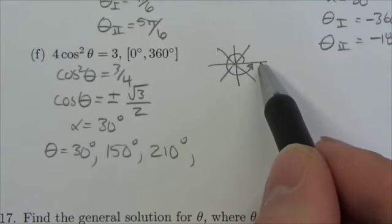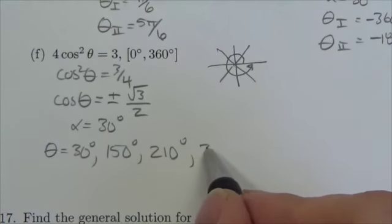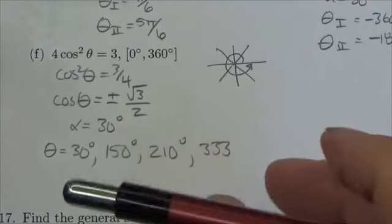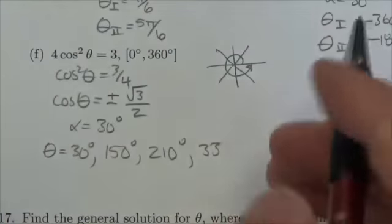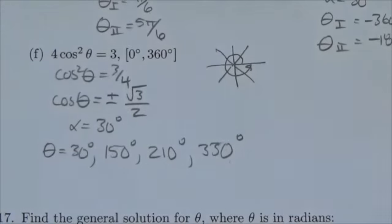And in the fourth quadrant I go forward all the way to 360 and then come back 30 to get 330 degrees. So those are the four angles that we're looking for in this question.